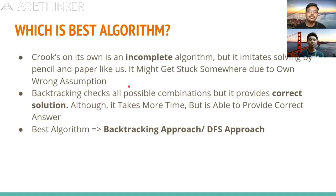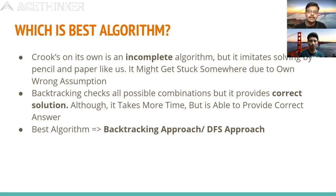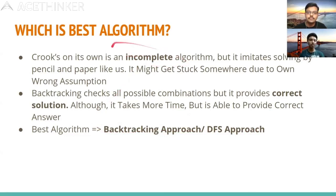What is the best algorithm? Crooks on its own is incomplete — it mimics pen-and-paper and may get stuck. Backtracking checks all possible combinations and is guaranteed to give the correct output. However, for larger puzzles like 25×25, backtracking suffers from computational explosion, potentially taking centuries. This phenomenon is called computational explosion. Crooks cannot guarantee correctness, so backtracking remains the reliable choice for correctness.